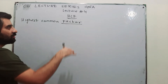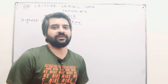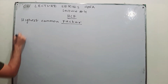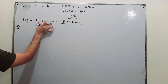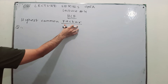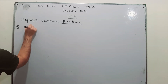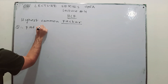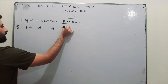Suppose we have two numbers. The concept of factor has already been discussed in my previous classes. Let's find the HCF of 3 and 6.